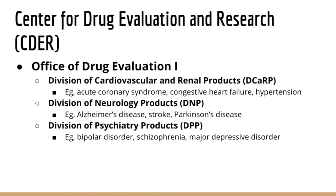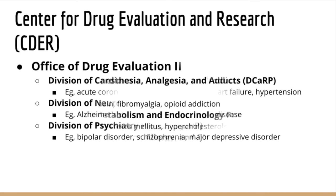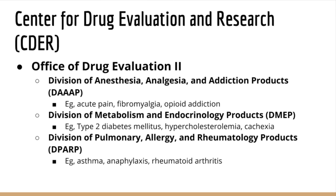These divisions are often a drug company's point of contact for drug development activities. In ODE1, we have DCARP, DNP, and DPP, which are responsible for regulating drugs for the treatment of heart failure, Alzheimer's disease, and clinical depression, respectively. In ODE2, we have DAP, DMAP, and DPARP, which regulate drugs for the treatment of pain, diabetes, and rheumatoid arthritis, respectively.